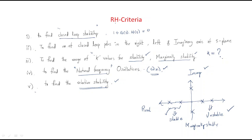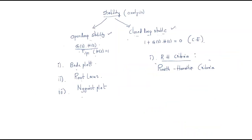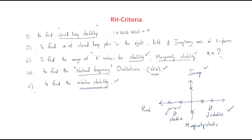These are the five important points regarding the RH criteria. In the next sessions, we will discuss the model of RH criteria — how to solve and test the stability of a given system using RH criteria. In this session we discussed what is stability, different types of stability, methods, and the theory of RH criteria. I hope all of you understood the session. Thank you.